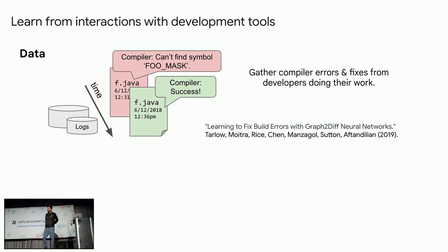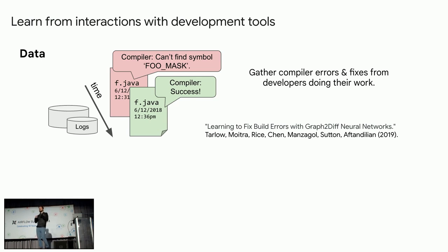Another valuable thing we looked at is the interactions of developers with tools — specifically the compiler. We collected a dataset of examples of broken code states and the error messages that came up when a developer tried to compile them, then grabbed the next state in the sequence of edits that successfully compiled. From there you get a dataset of edits. The learning task is: given a broken code state, either predict the error messages to understand whether code is correct, or do a repair task where you have the error message and broken code and predict a fix.